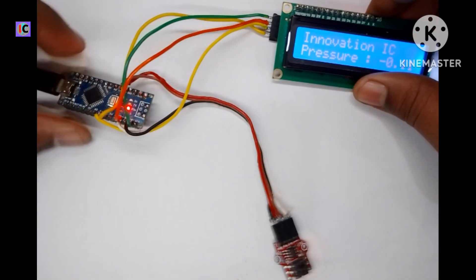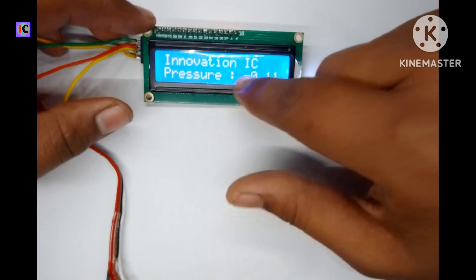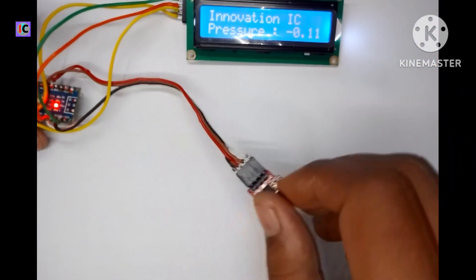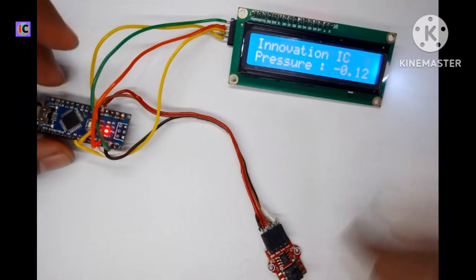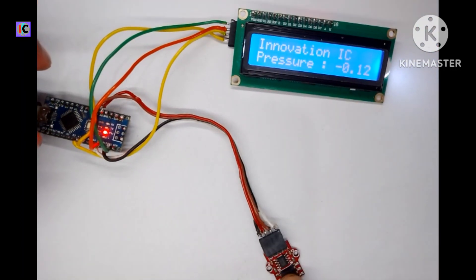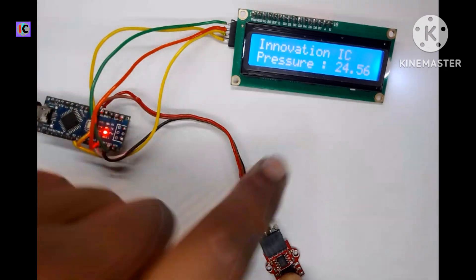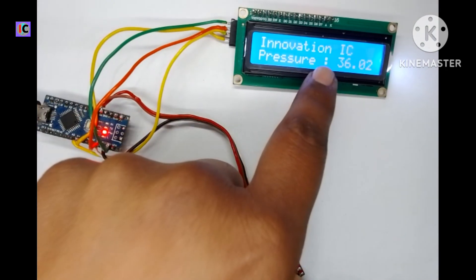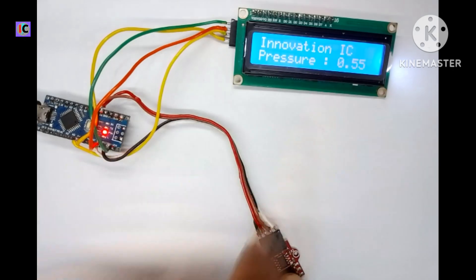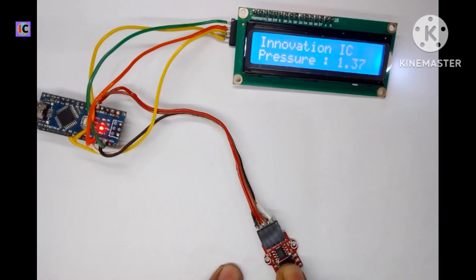I have uploaded the code and you can see the display printing the pressure in kilopascals. Here you can see when I press the sensor with my fingers.